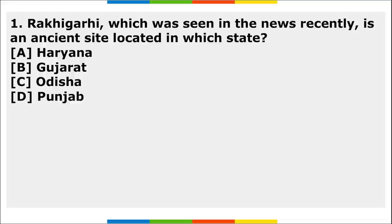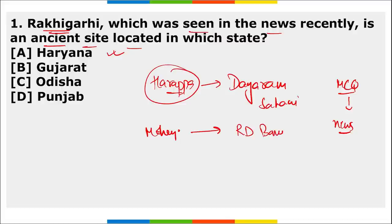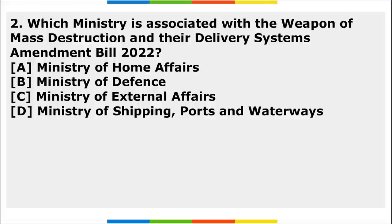Now let's move to the session. First MCQ: Rakhigarhi, seen in the news recently, is an ancient site located in Haryana. Harappa was founded by Dayaram Sahani, and Mohenjo-daro was founded by R.D. Banerji. The port found during the Indus Valley excavations was Lothal.